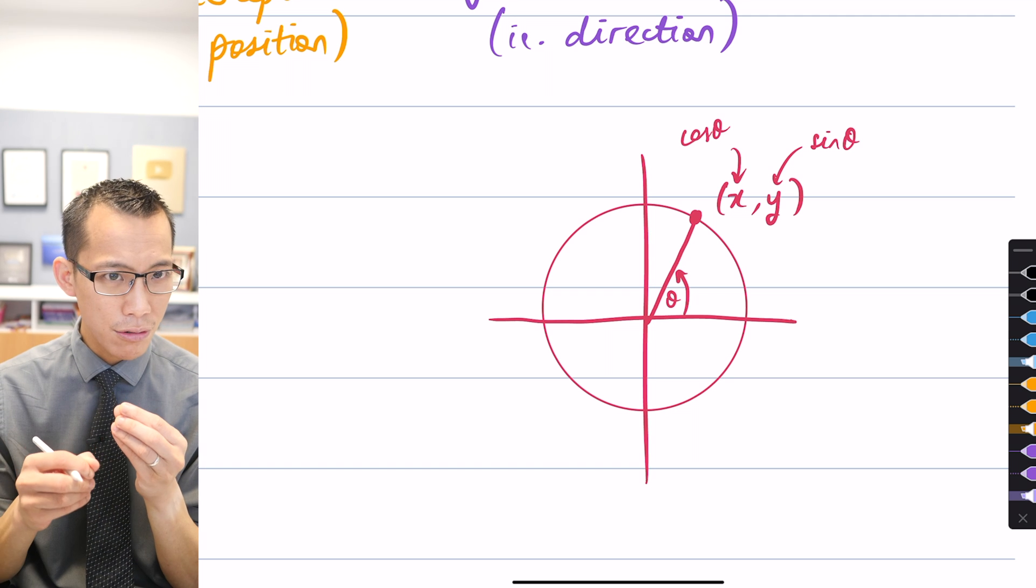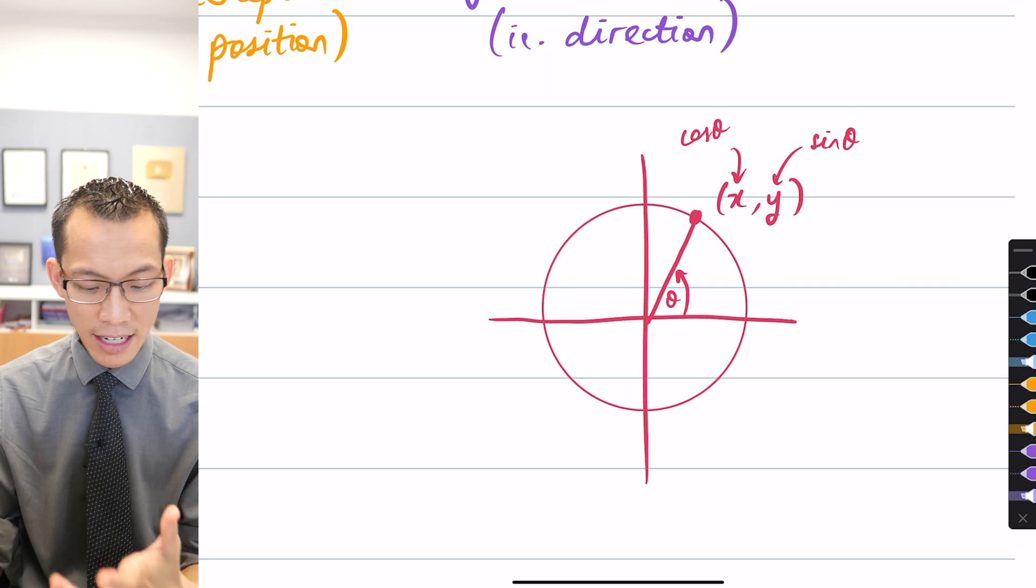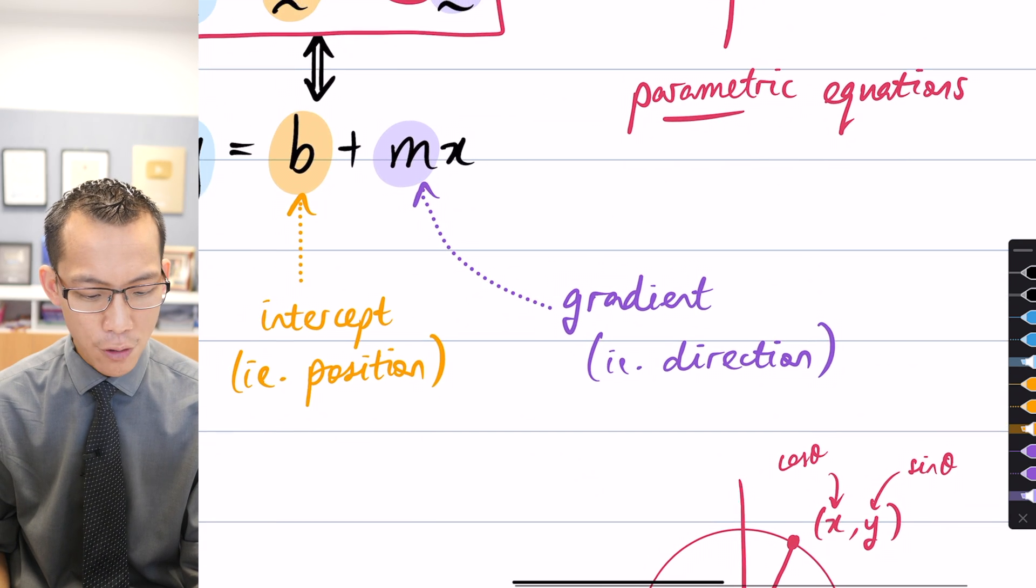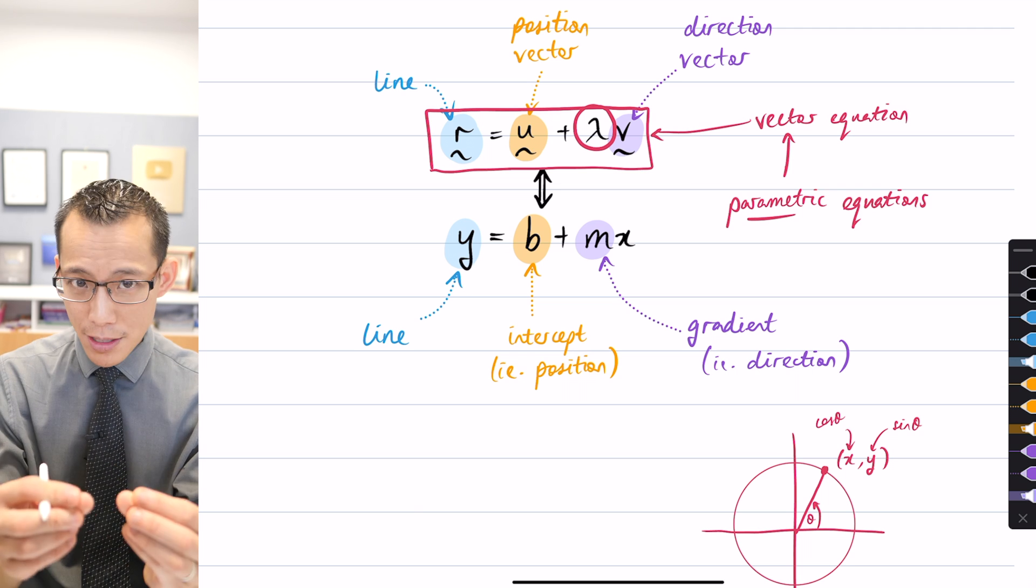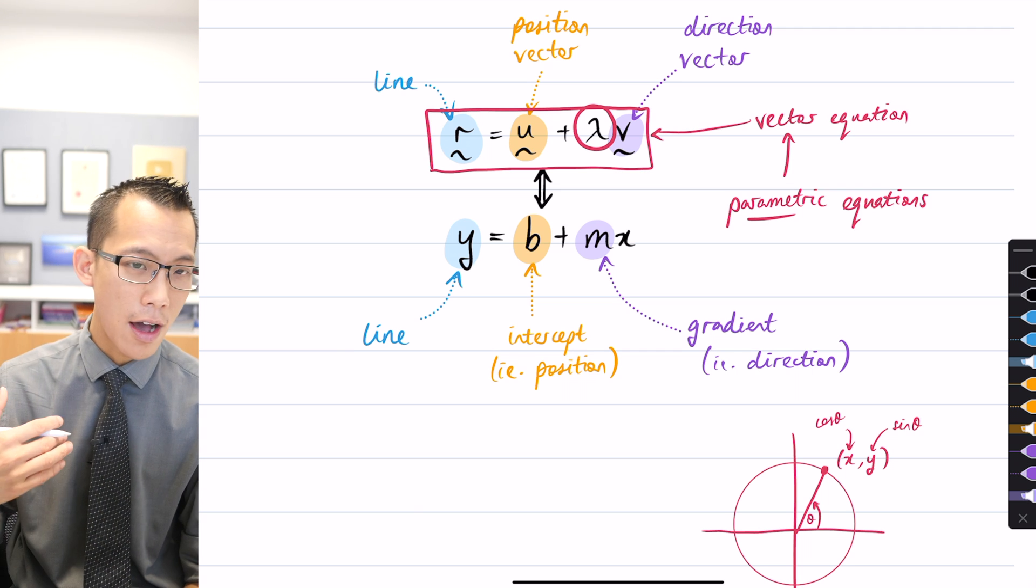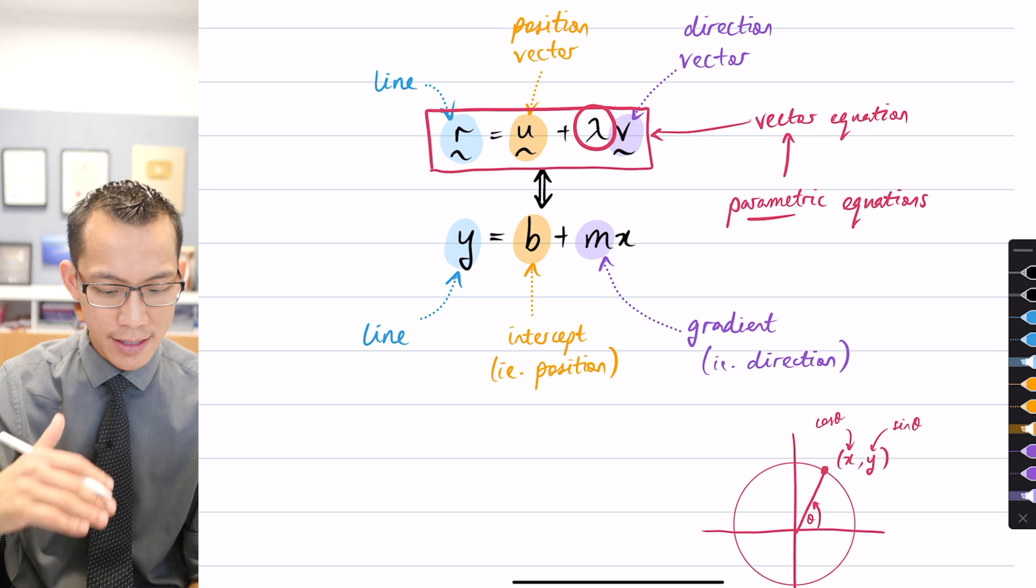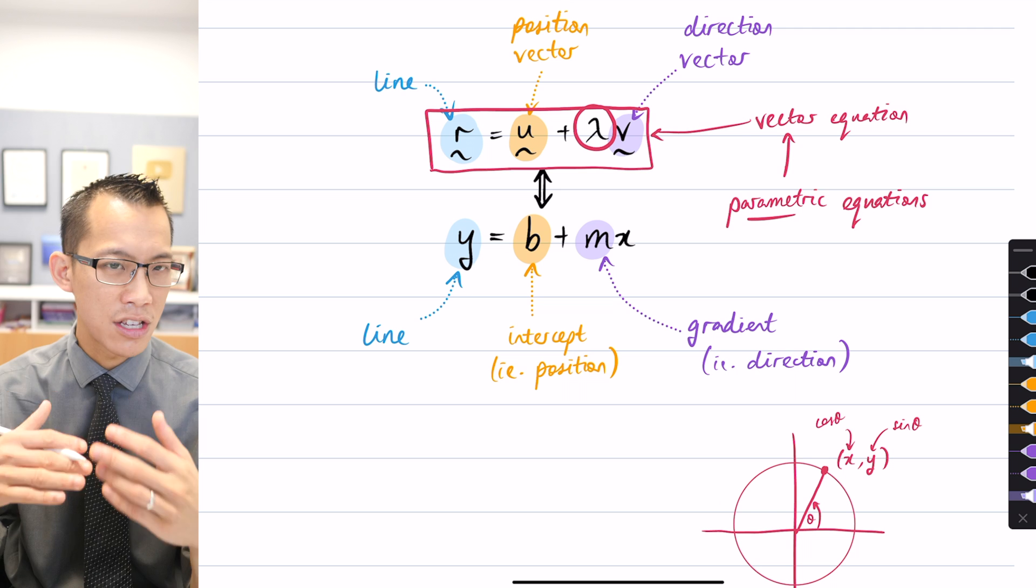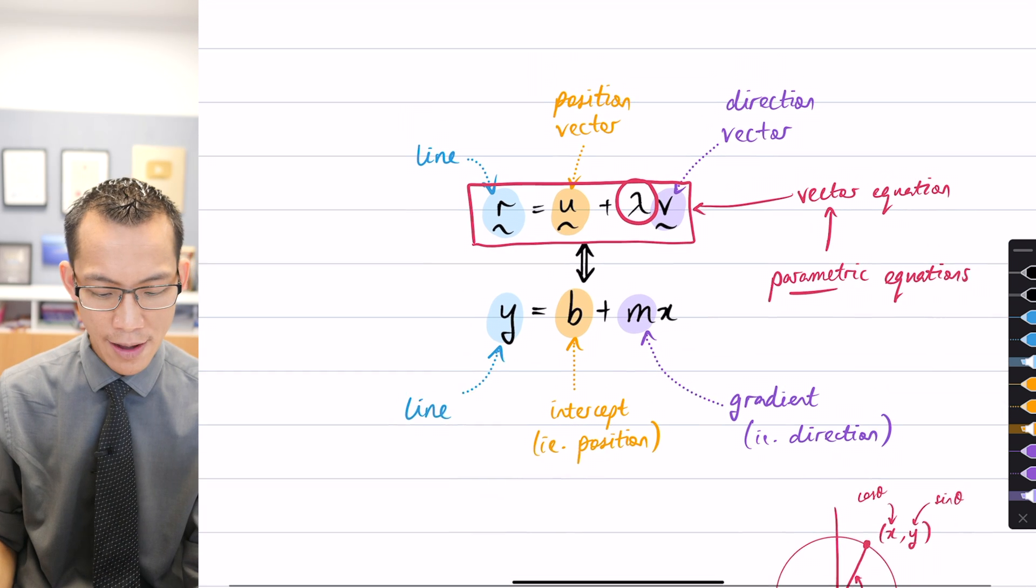Theta is a single variable that if you give me the theta, I can tell you what the x and y are. In the same way, if you look at the vector equation of this line, lambda is a single variable that if you give me the lambda, I can give you the x, y, and z by substituting into each of the parametric equations. So this is where we left off.